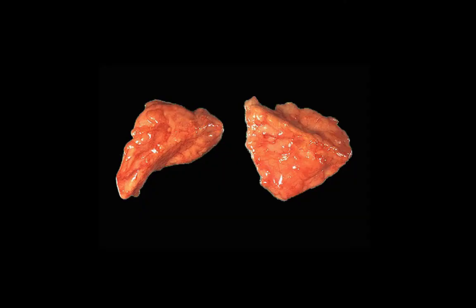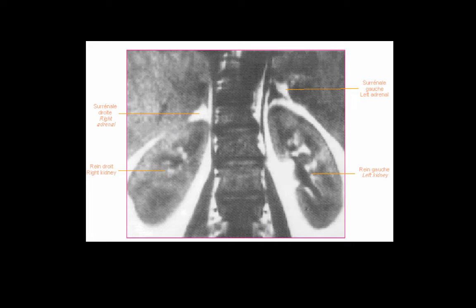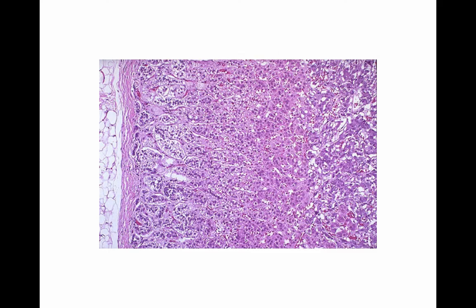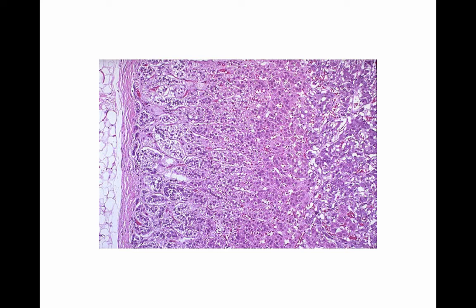The adrenal gland is glandular tissue with a triangular shape sitting on top of the kidneys — formerly called the suprarenal gland, now called adrenal, meaning on top of the renals. In the adrenal cortex there are three zones: zona glomerulosa, zona fasciculata, and zona reticularis. The adrenal — ad being above, renal being kidney — with cortex as the outer portion.